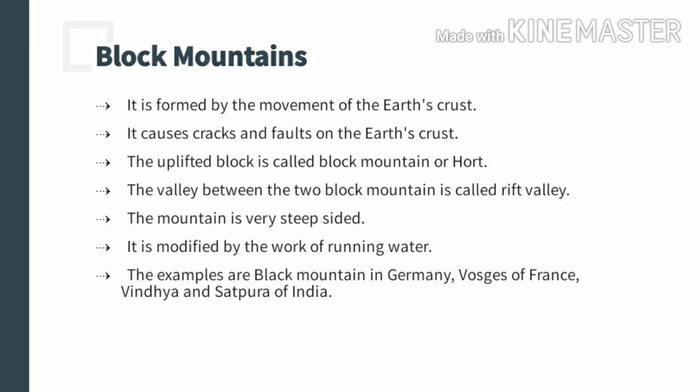The horst is formed because of the rise of the blocks. The valley that occurs between two horsts or two block mountains is known as the rift valley. The block mountain is usually very steep-sided, and the summit level is roughly leveled — not completely flat, but roughly leveled.